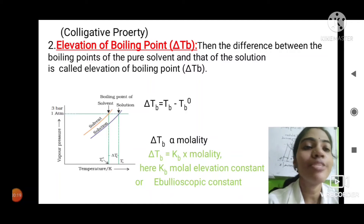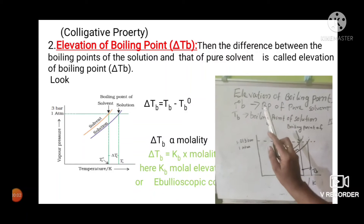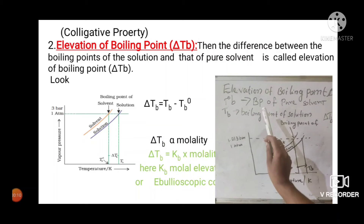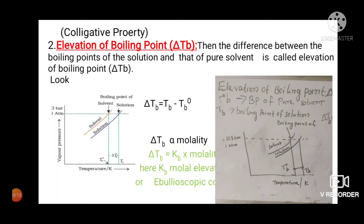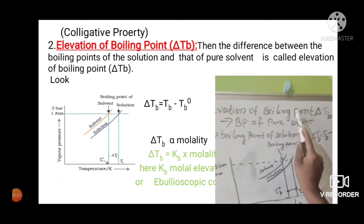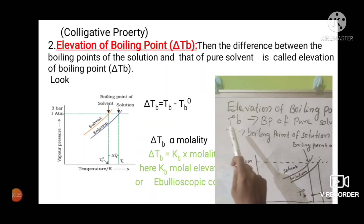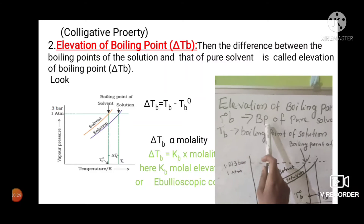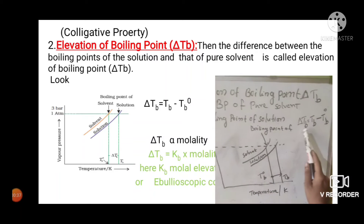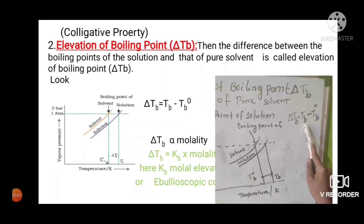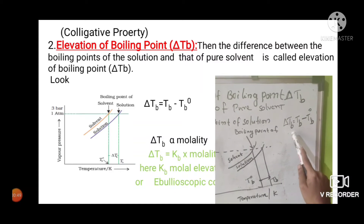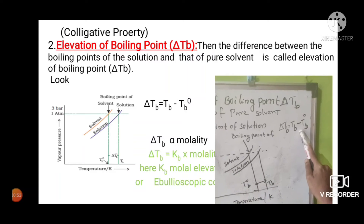The solution has to be heated to a higher temperature in order to make the vapor pressure equal to the atmospheric pressure. The elevation in boiling point is the difference between the boiling point of the solution and that of the pure solvent. Let T₀b be the boiling point of pure solvent and Tb be the boiling point of solution, then ΔTb = Tb − T₀b.